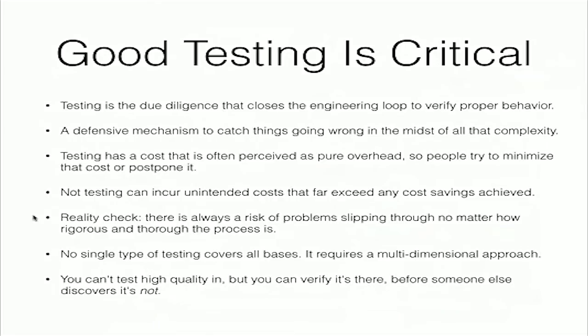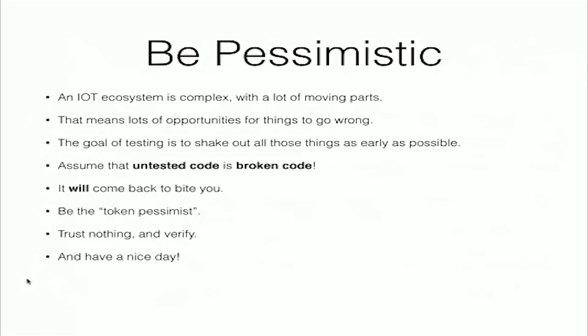A reality check: there's always a risk of problems slipping through no matter how rigorous and thorough the process is. That's just the way things are. No single type of testing covers all the bases — it requires a multi-dimensional approach. You can't test high quality in, but you can verify it's there before someone else discovers that it's not. We have to be pessimistic. The goal of testing is to shake out problems as early as possible. You have to assume that untested code is broken code — if you haven't tested it, you can't trust it.